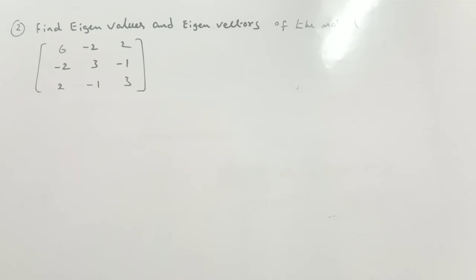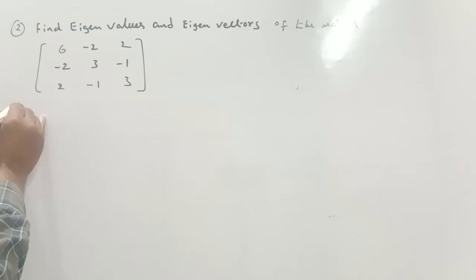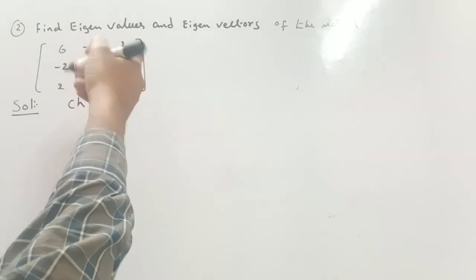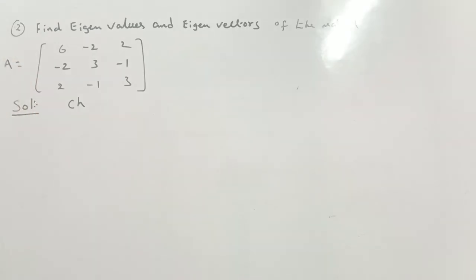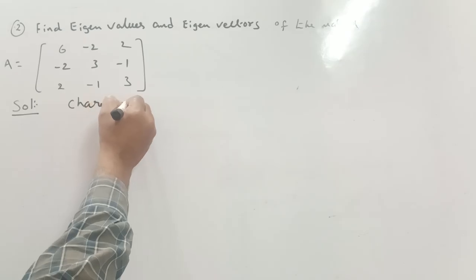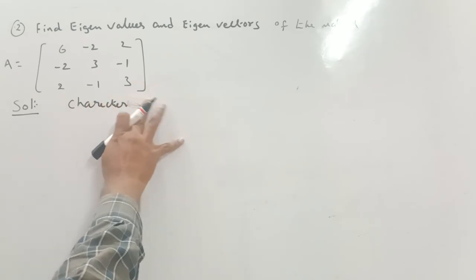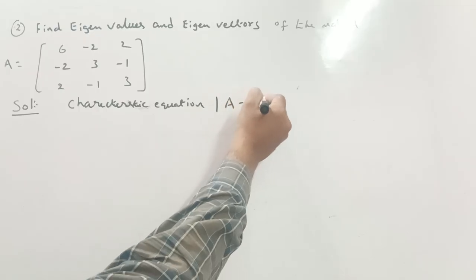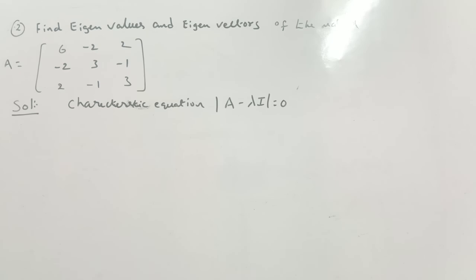Next problem: find eigenvalues and eigenvectors of the matrix. Eigenvalues and characteristic roots are the same; eigenvectors and characteristic vectors are the same. First, to find eigenvalues and corresponding eigenvectors, we write the characteristic equation: |A minus lambda I| equals 0.